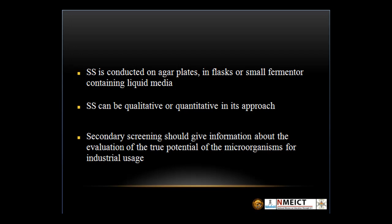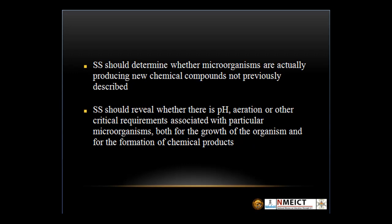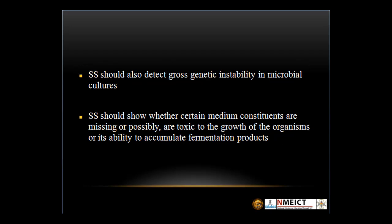Secondary screening determines whether microorganisms are actually producing a new chemical compound or a previously described compound. It should also reveal the optimization of parameters like pH, aeration, or other critical requirements associated with particular microorganisms for the growth of organisms and for formation of the product. Secondary screening should also detect gross genetic instability of the isolate, and should show whether certain medium constituents are missing or possibly toxic to the growth of the organisms or its ability to accumulate fermentation product.